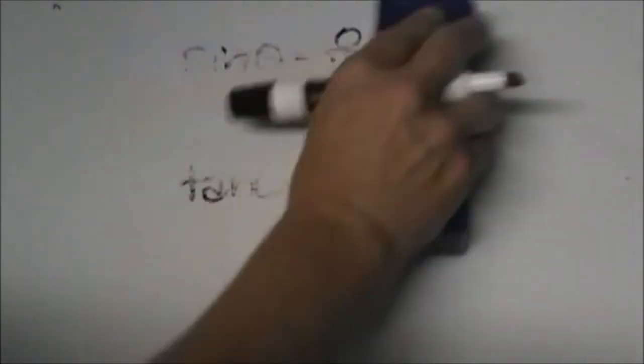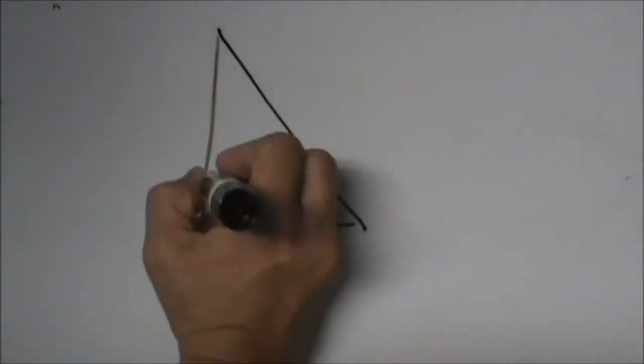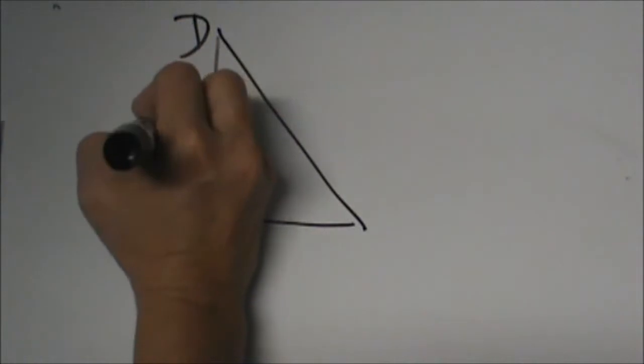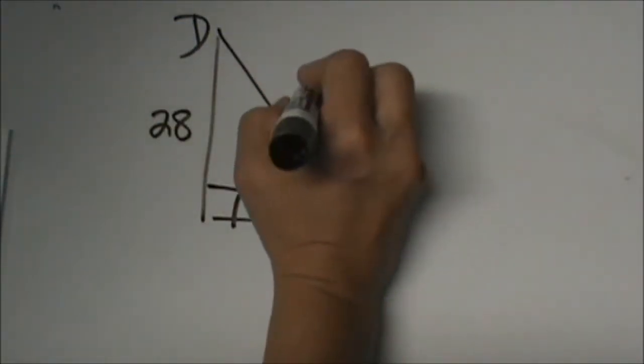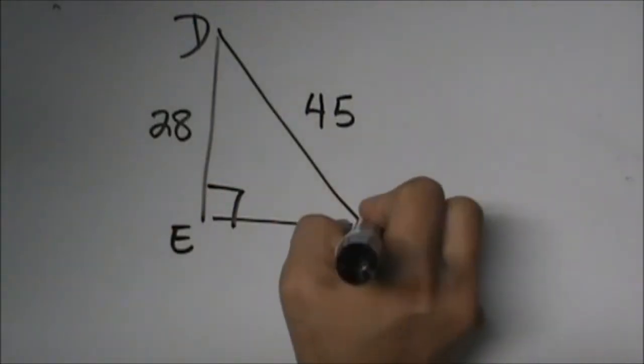We have practice one: Find angle measure D. Let's look at our triangle. We have D up here, a 28 here, and a 45 here, and I'm going to label E and F for you.